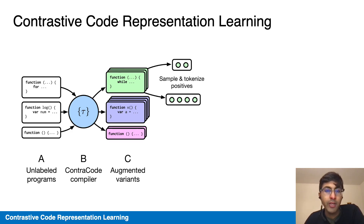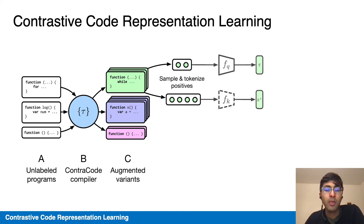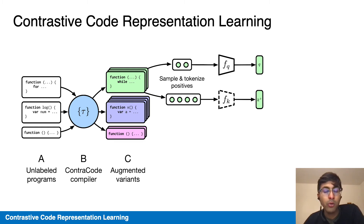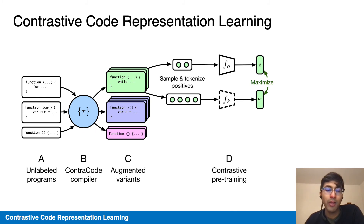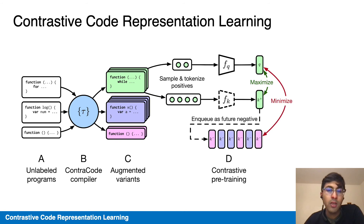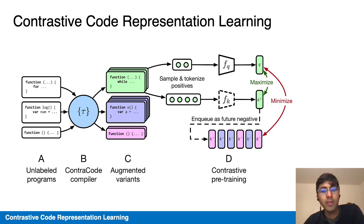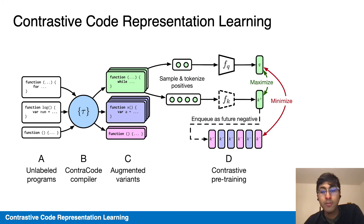In training, each iteration will sample a batch of positives and tokenize them. Encoding these with a neural network FQ, the query encoder, and an exponential moving average of its parameters, the key encoder, results in two positive embeddings that are maximized in similarity. To get the negatives, we'll minimize similarity with past positives. These past positives in the cached queue act as negatives because they very likely come from different stacks of programs. Queueing these and storing them into cache saves computational expense.